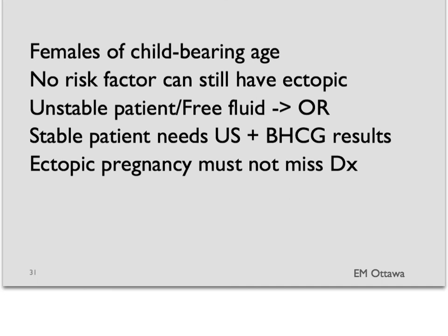To recap: all females of childbearing age need a urine beta-HCG. Patients who have no risk factors can still have an ectopic pregnancy. Any patient who is unstable or has free fluid in the abdomen needs to go to the operating room. For stable patients, management is a combination of what shows on ultrasound — whether there is or is not an intrauterine pregnancy — and how high the beta-HCG level is in the blood. Ectopic pregnancy, because of its potentially devastating complications, is a must-not-miss diagnosis in the emergency department. We hope you enjoyed it. Thank you very much for watching.